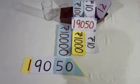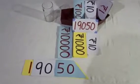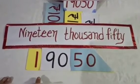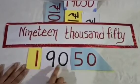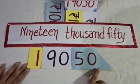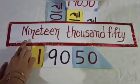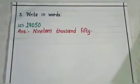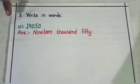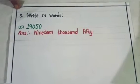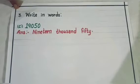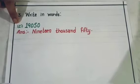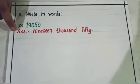Now we will write it in words. We will write 19,050 in words the same way we would read it. Dear students, you have to write it in your notebooks. First of all, write the number and part C, and after that write it in words like this.